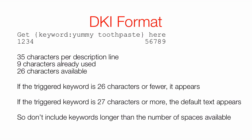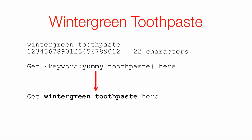So if the triggered keyword in my list is 26 characters or fewer, that's what appears. If the triggered keyword is 27 characters or more, then the default text appears. In this case the default text is 'yummy toothpaste.' My advice is: don't include keywords longer than the number of spaces available, or the default appears. For example, 'wintergreen toothpaste' including the space has 22 characters, so the line would appear as 'get wintergreen toothpaste here.'